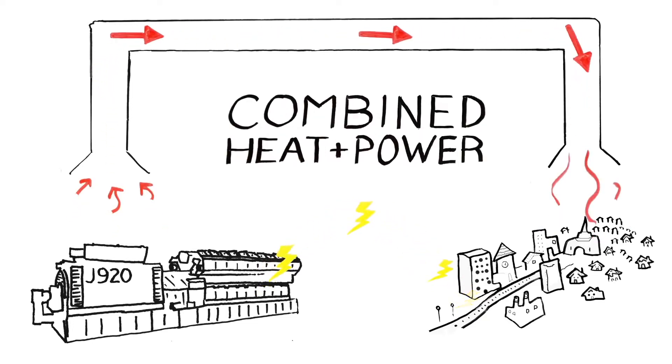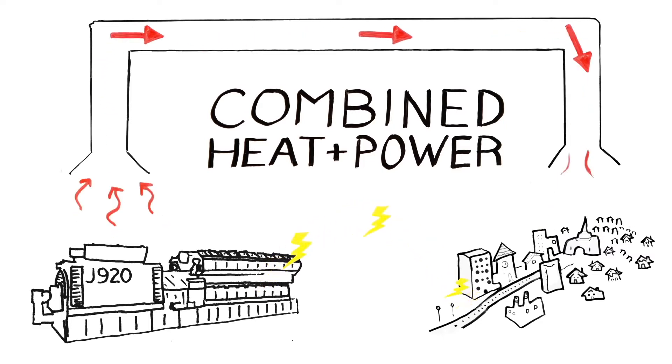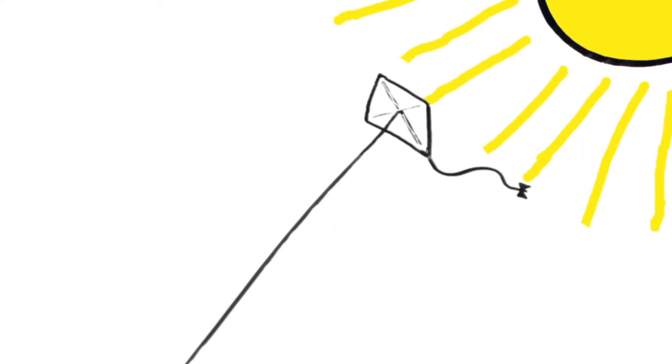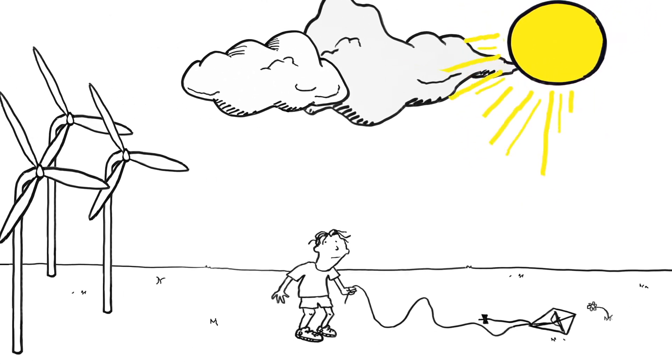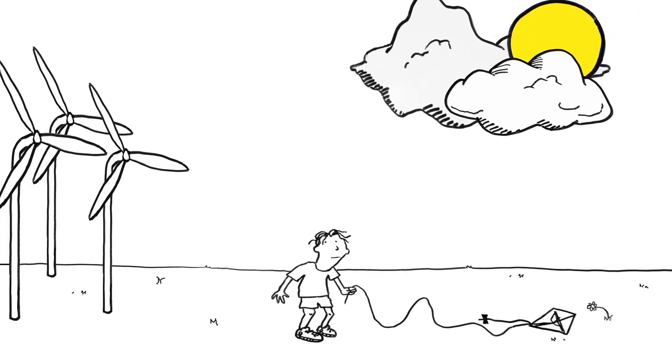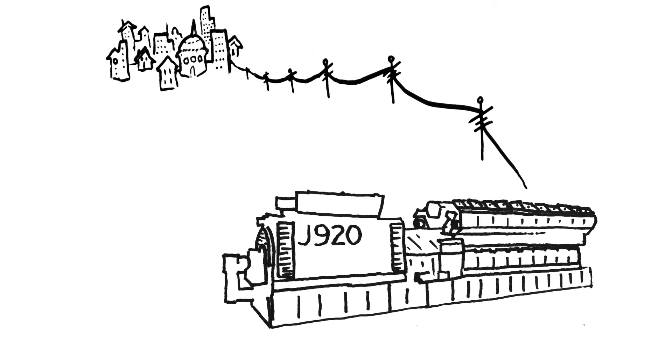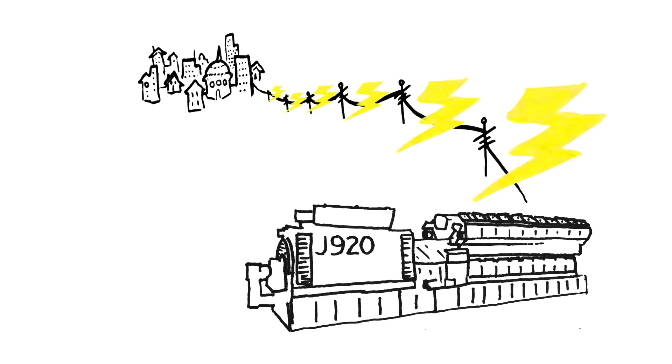And while we always try to use the sun and the wind to make power, the wind doesn't always blow and the sun doesn't always shine. The new system allows us to start up the J920 Flextra quickly, which means the town will never lose power, even when the sun goes behind a cloud.